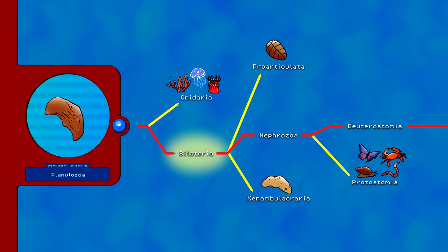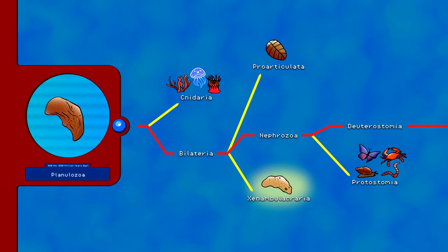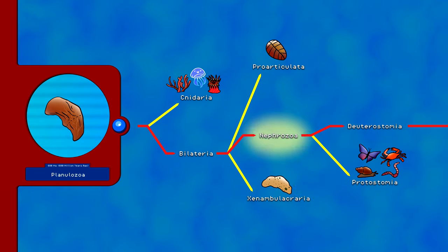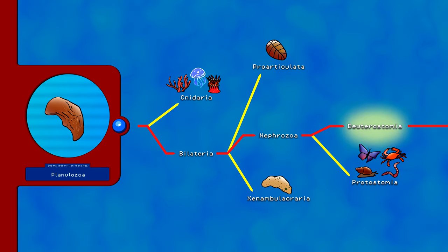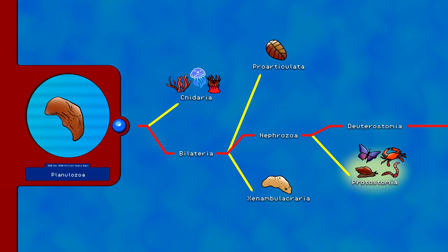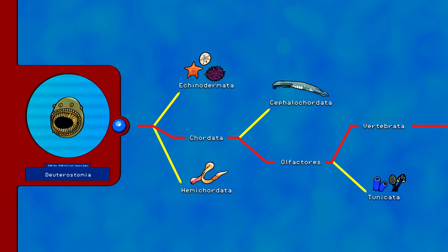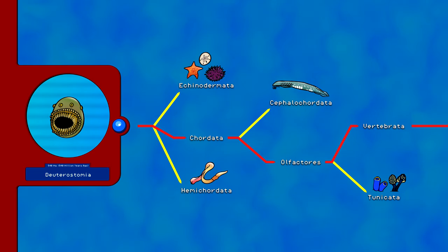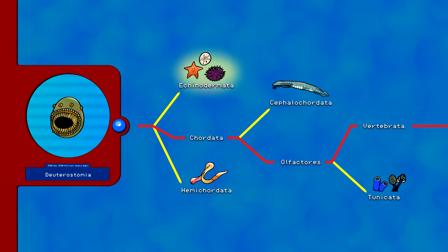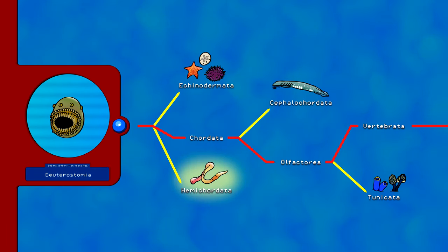After the appearance of Bilaterians, there was another split, separating Proarticulata and Xenosilomorpha — which includes Acoela and other worms — and the clade Nephrazoa. Nephrazoa is a major branching point, splitting into Deuterostomia and Protostomia, the ancestor of molluscs, arthropods, and annelids. The earliest known Deuterostome is called Saccorhytus. Around 540 million years ago, Deuterostomia branched into Chordata and Ambulacraria, which includes Echinodermata — starfish, sea urchins, sand dollars, and sea cucumbers — and Hemichordata, which contains acorn worms.